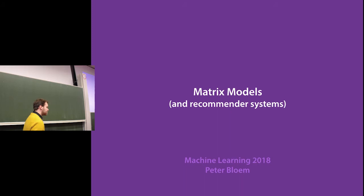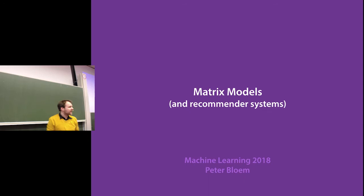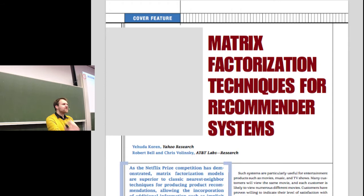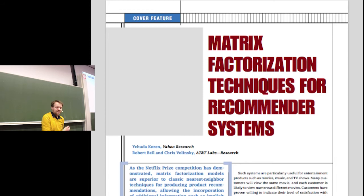Good morning. Today's topic is matrix models and recommender systems — a setting and type of model that are quite intimately related, so we'll go through both of them. Most of what I'm going to talk about comes from the paper 'Matrix Factorization Techniques for Recommender Systems' by Yehuda Koren, which is a very nice, gentle introduction to the subject. It's not required reading, but it is recommended reading.